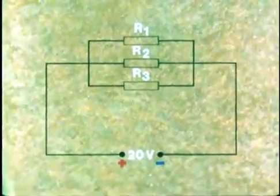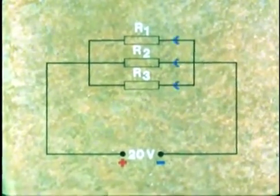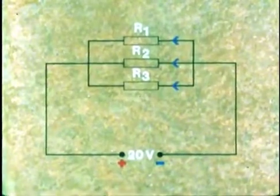When connected to a source of power of say 20 volts, there will be the same EMF of 20 volts pushing current through each resistance. But it will not be the same current in each of the three paths.